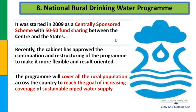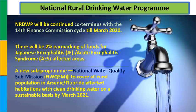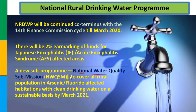National Rural Drinking Water Program एक centrally sponsored scheme है जिसमें state और center के बीच 50-50 percent sharing है. इसमें rural areas तक piped water supply sustainable तरीके से पहुंचाने का काम है. Total funding में से 2 percent Japanese Encephalitis और Acute Encephalitis Syndrome affected areas में safe water supply के लिए अलग से दिया जाता है. इसके अंदर एक sub-program है National Water Quality Sub-mission, जिसमें arsenic और fluoride affected habitations में March 2021 तक clean drinking water provide करानी है.